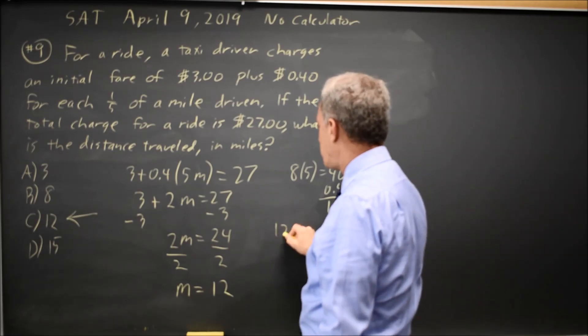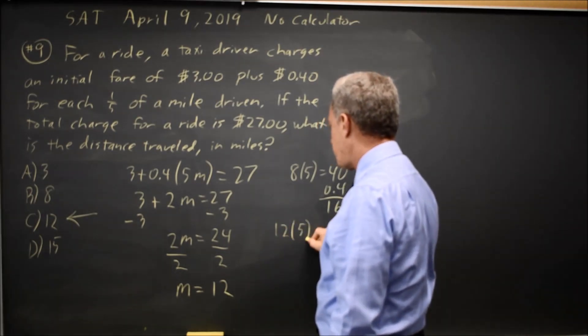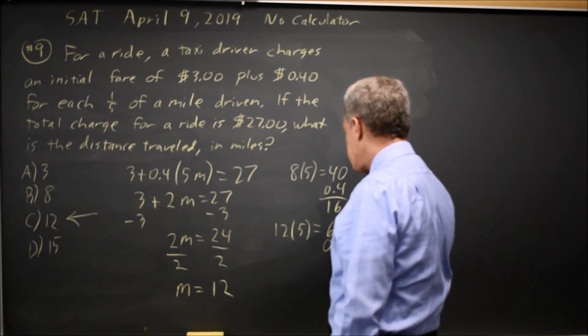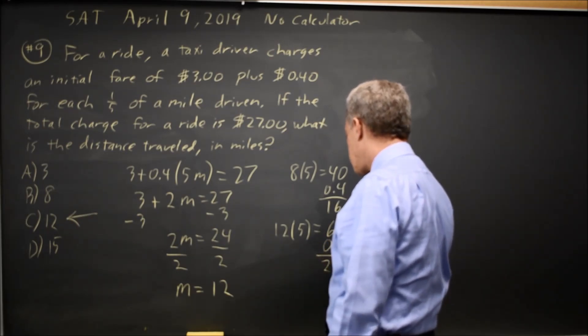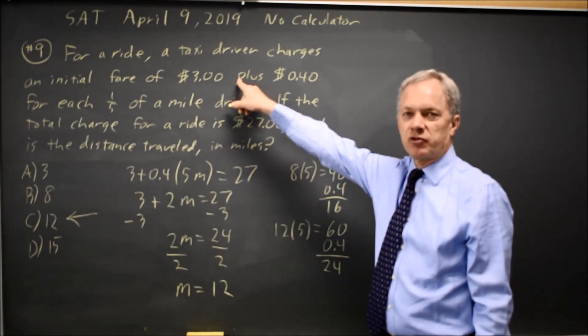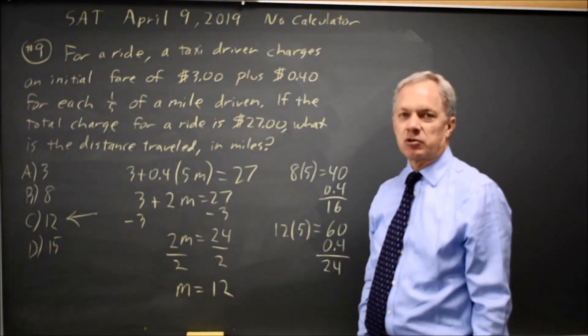If we try 12 miles times 5 fifths per mile is 60, and 60 times 0.4 is $24 for mileage plus the $3 initial fare is 27, and that is the correct amount.